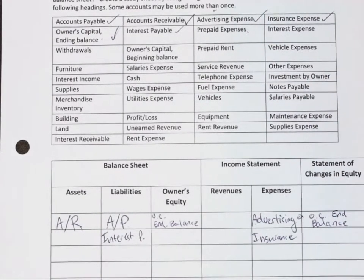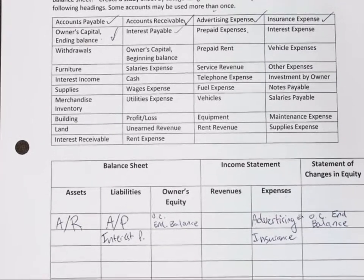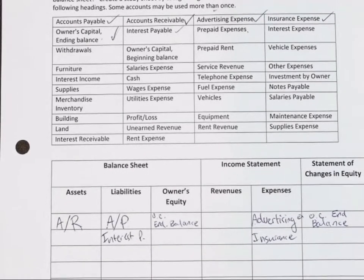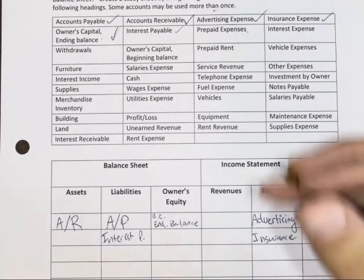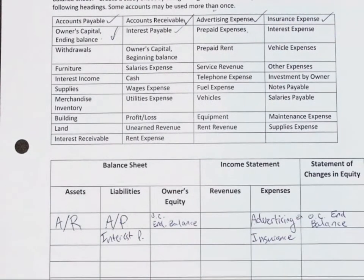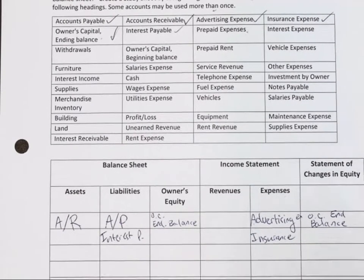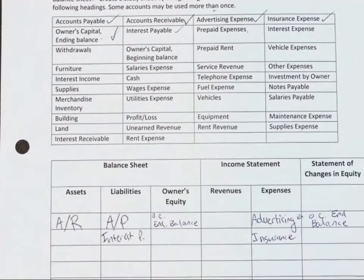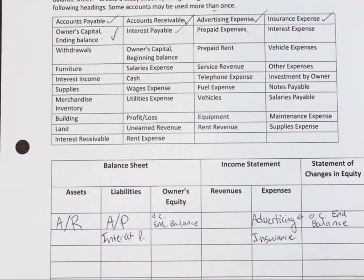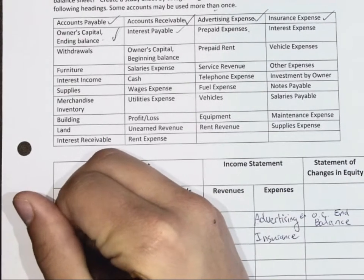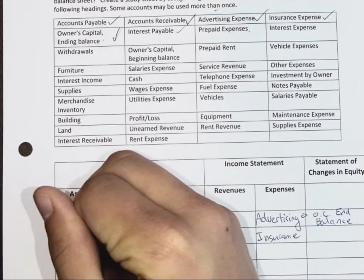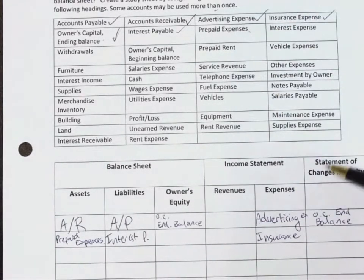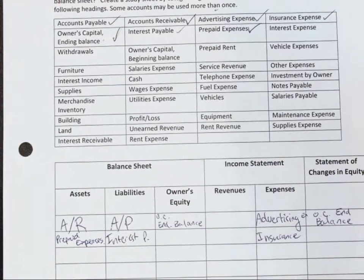Prepaid expenses are like when you start your phone plan and you win the lottery so you prepay your phone bill — say a thousand dollars. You get your bill and you're at nine hundred dollars so they give you a credit. You have a credit with one of your suppliers or service providers, and that would be an asset because you can always cancel your account and they'll pay you back. Someone might say 'expense' because it has expense in it, but it is actually an asset.